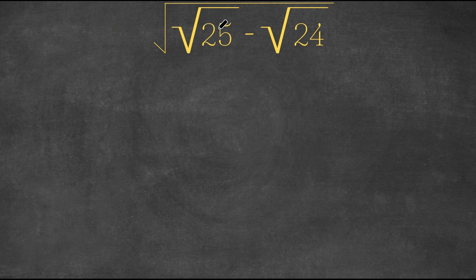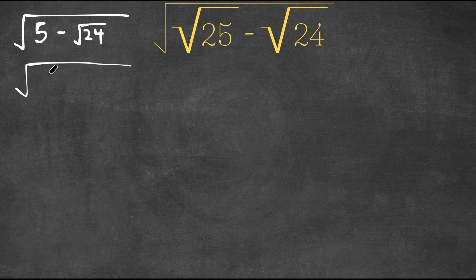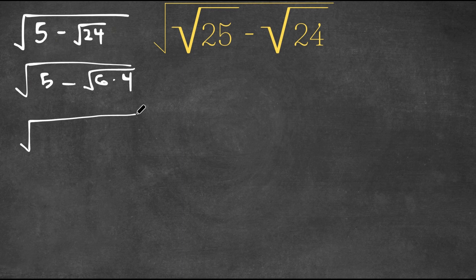Now the square root of 25 is simply 5. So this will give us the square root of 5 minus the square root of 24. Now the square root of 24 can be written as the square root of 6 times 4, because 24 is equal to 6 times 4. And the square root of 4 is 2, so this would be the square root of 5 minus 2 times the square root of 6.